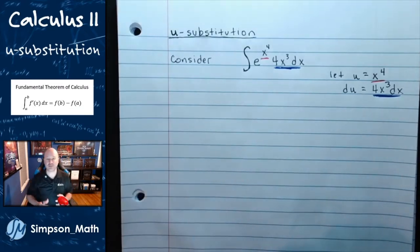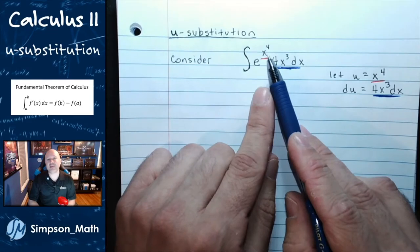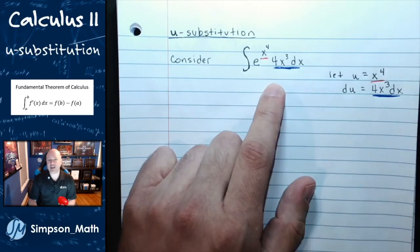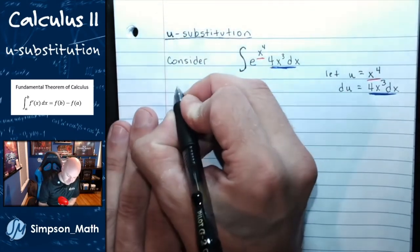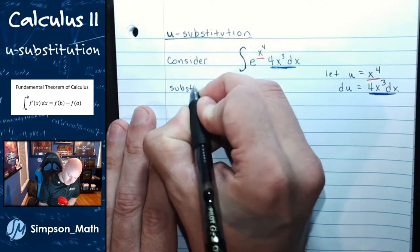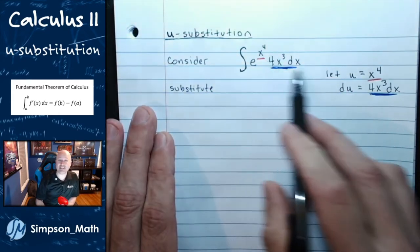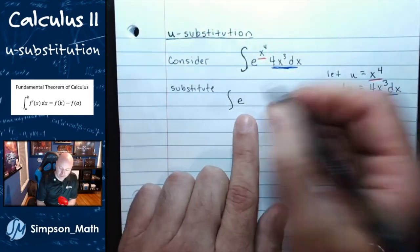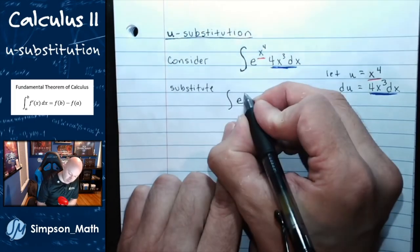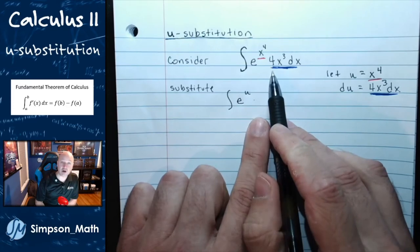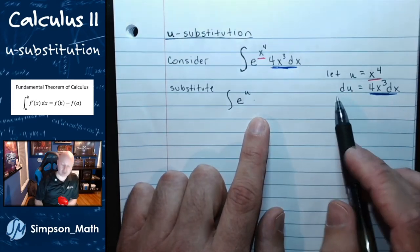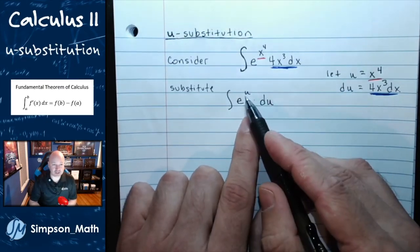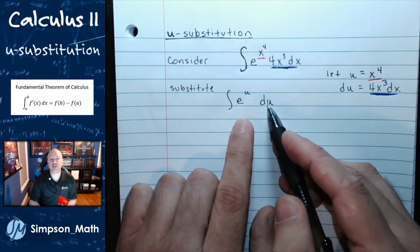This is u-substitution — finding a piece of the integral whose derivative is also in the integral. Now let's substitute, switching over from x's into u's. I still have the integral, but now I have e raised to the u power, being multiplied by du.